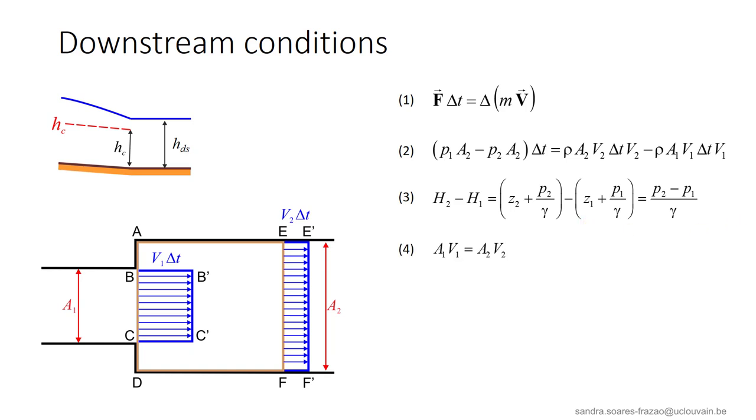Then, using the continuity equation 4, we can replace the areas in equation 2 by the velocities and express the difference in piezometric head as in equation 5. From this equation, we see that if A2 becomes infinite, V2 will approach 0, will become almost equal to 0, and H2 is equal to H1.